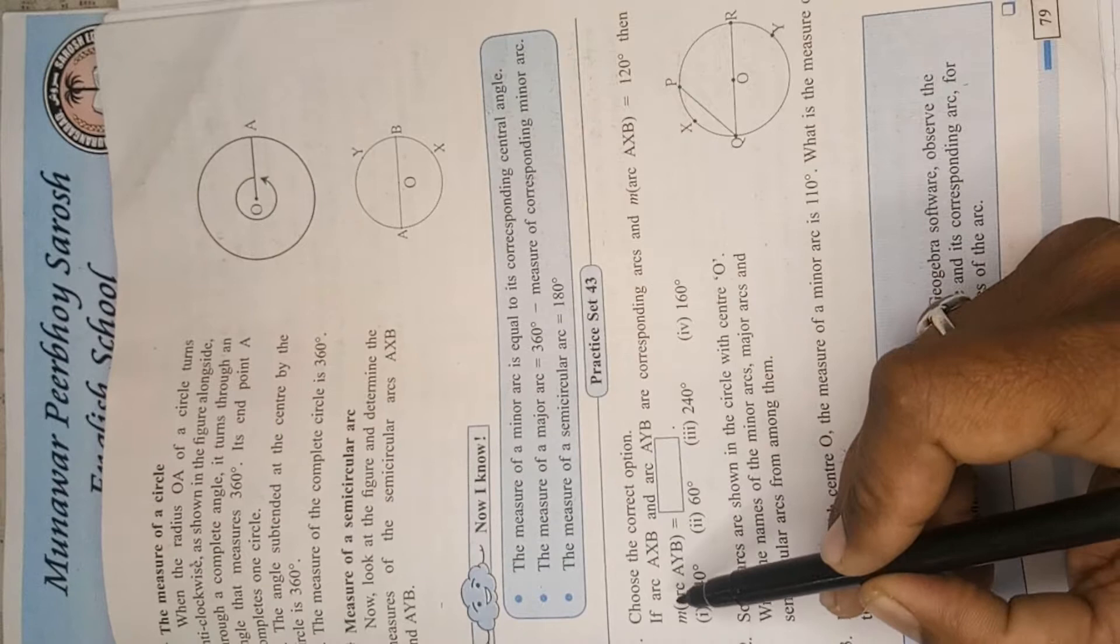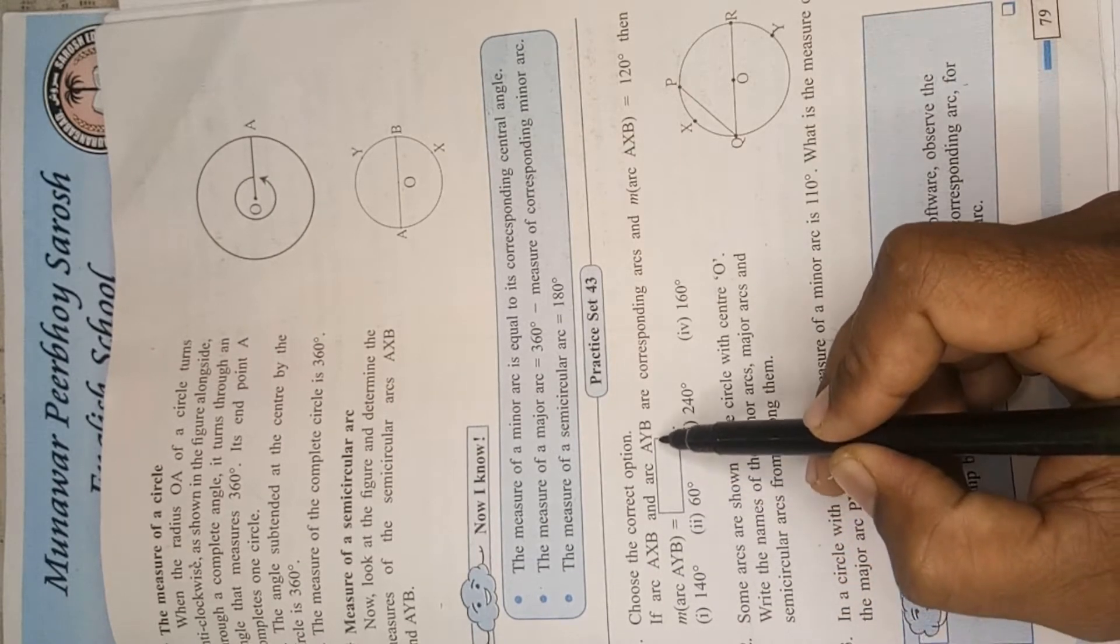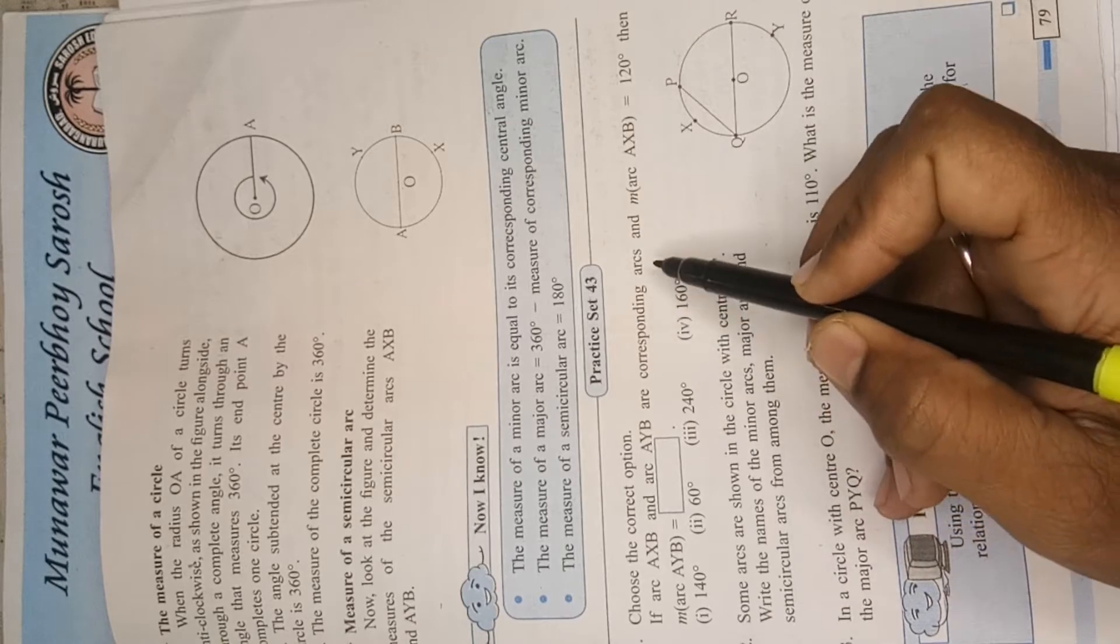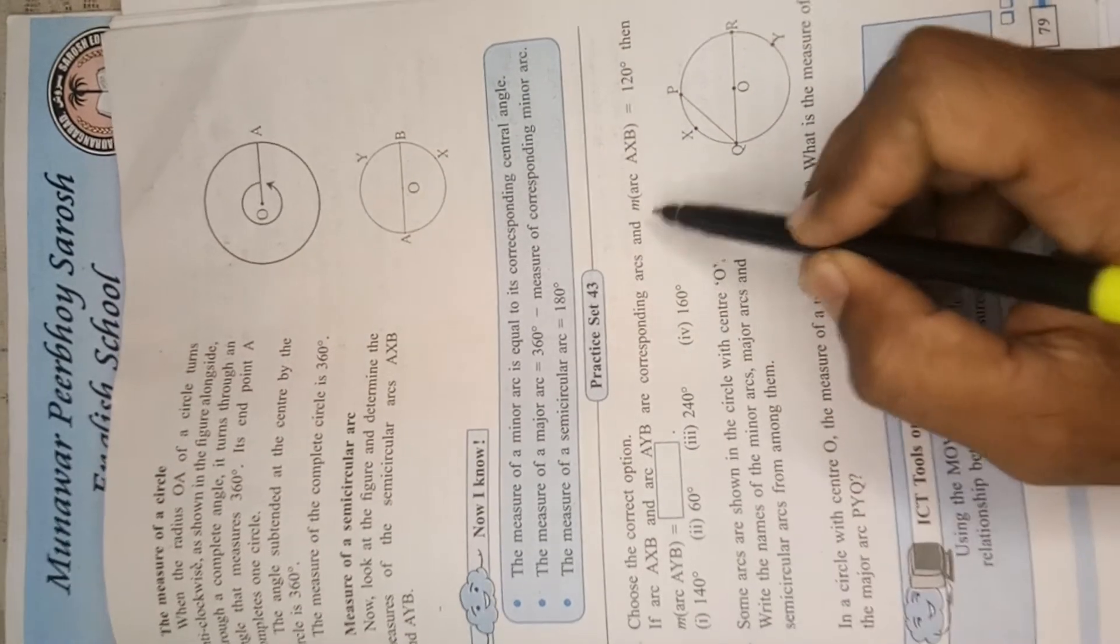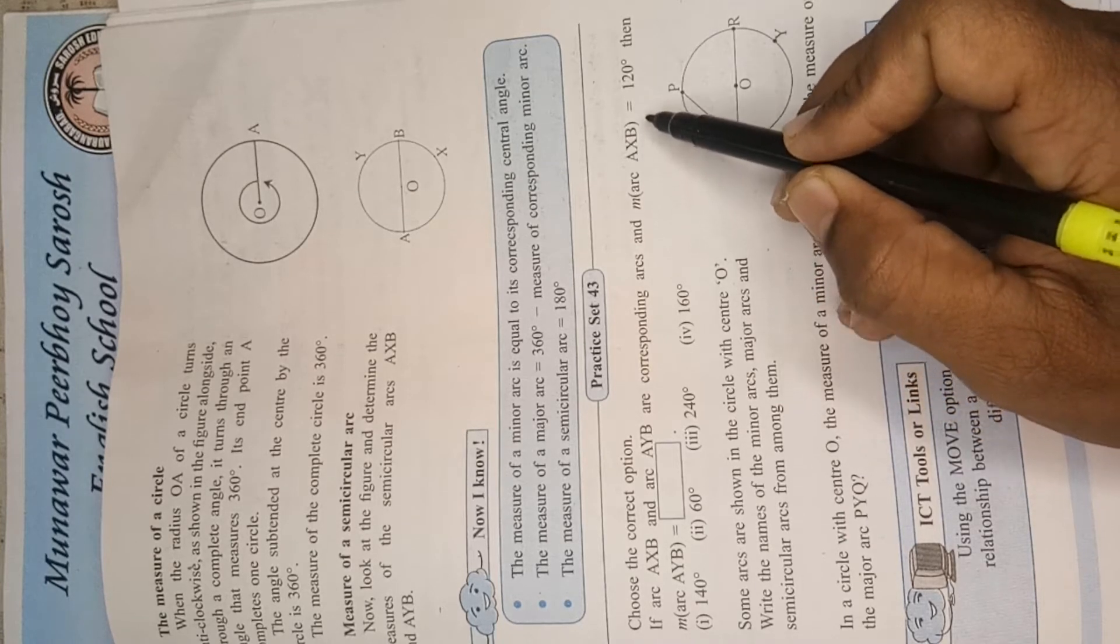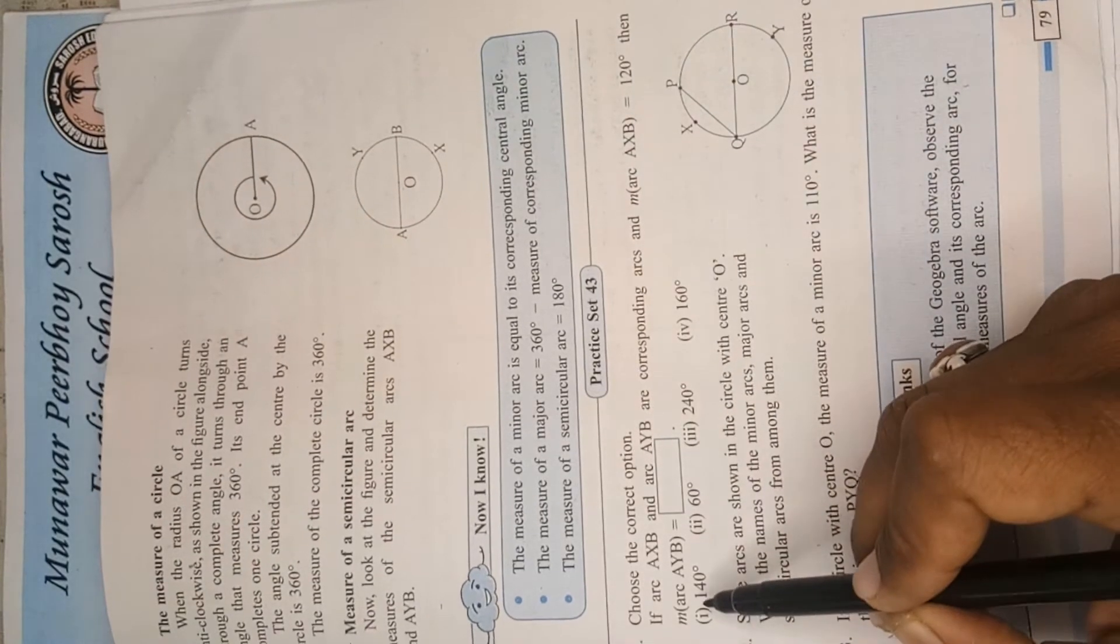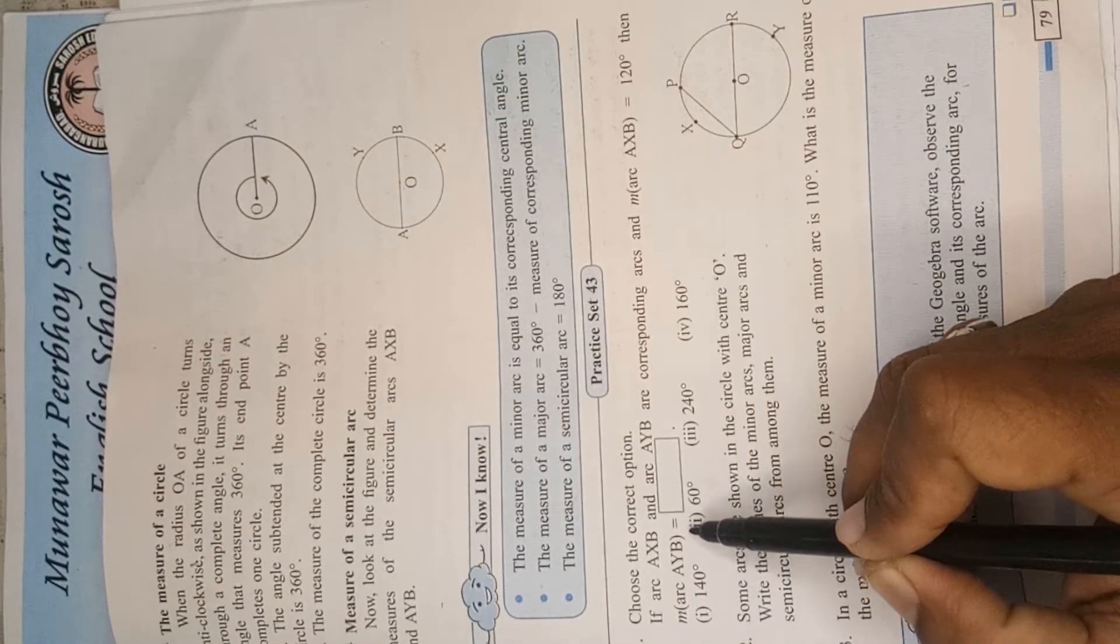Question: If arc AXB and arc AYB are corresponding arcs and measurement of the arc AXB is equal to 120 degree, then measurement of arc AYB is equal to how much?